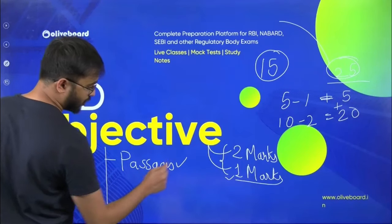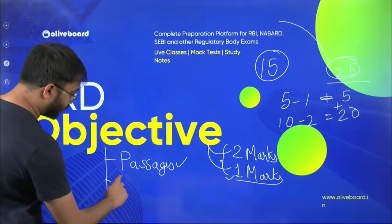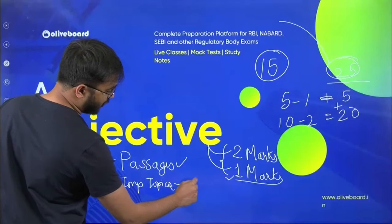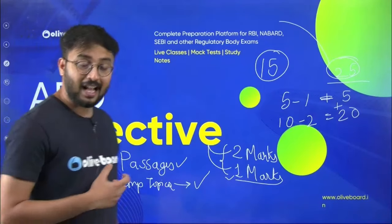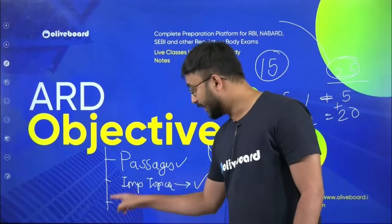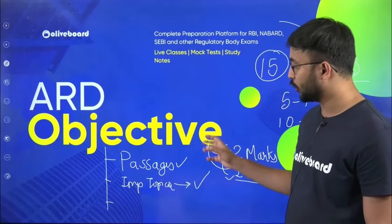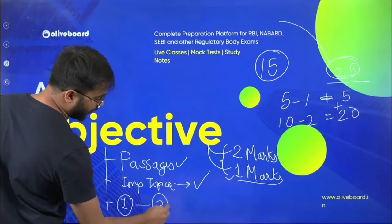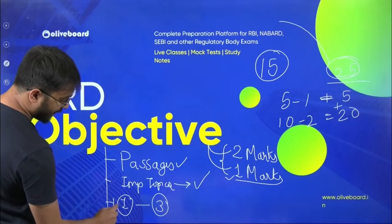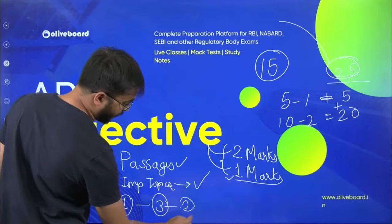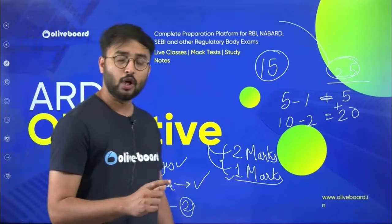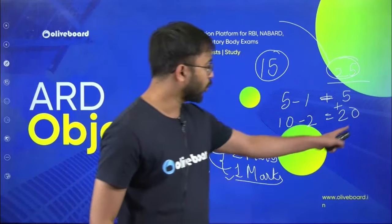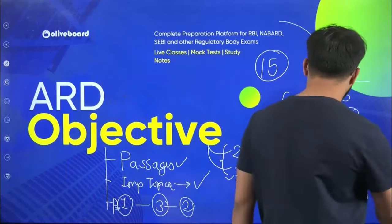Two-marker questions are full of passages. There are certain important topics with higher probability to appear in your Phase 2 exam. On each passage, three questions are associated, each for two marks. Therefore one passage gives you six marks. Out of 20 marks, you can expect 3 to 4 passages in ARD.